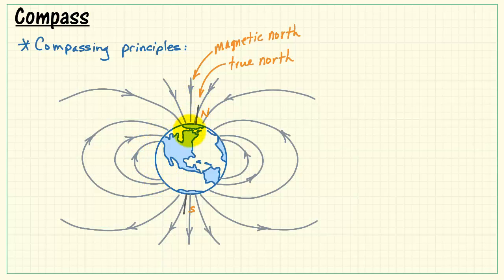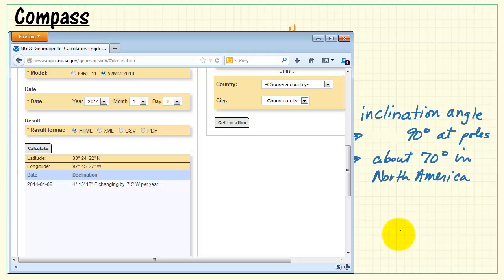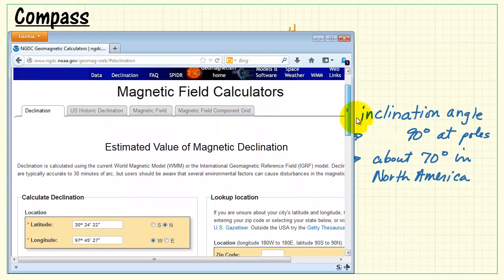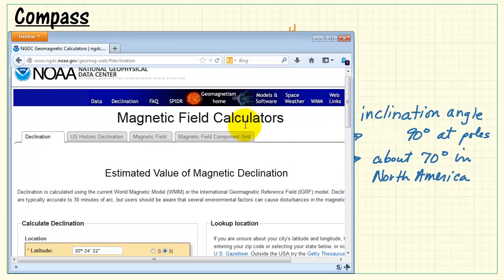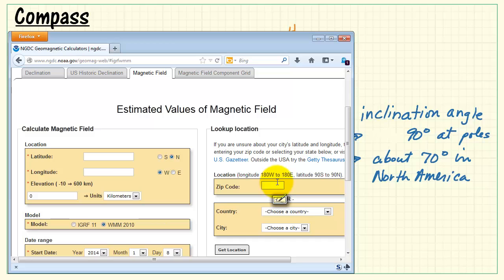Also note that the magnetic field lines are only 90 degrees at the poles and then it would be some lower angle elsewhere. This inclination angle is on the order of 70 degrees in North America. You can also find this from the geophysical data center web page as well.